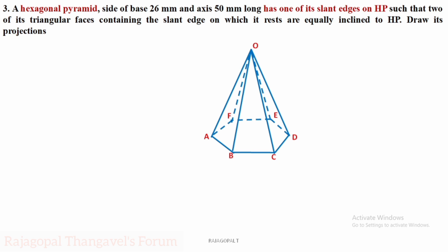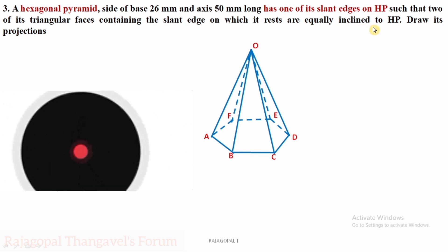Hello friends, welcome back. In this video we will discuss one more hexagonal pyramid. In the previous videos we discussed hexagonal pyramids with triangular faces on HP, then hexagonal pyramid where edges are perpendicular to both HP and VP. Here the hexagonal pyramid has slant edges on HP. A hexagonal pyramid with side of base 26 mm and axis 50 mm long has one of its slant edges on HP, such that two of its triangular faces containing that slant edge are equally inclined to HP. Draw its projections.